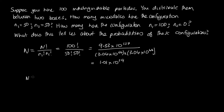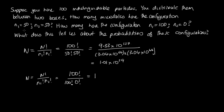Now for the configuration n1 equals 100 and n2 equals 0: W = 100! / (100! times 0!). Since 0 factorial equals 1, this is 100! divided by 100!, which equals 1. So there is only one microstate with all particles in one box.